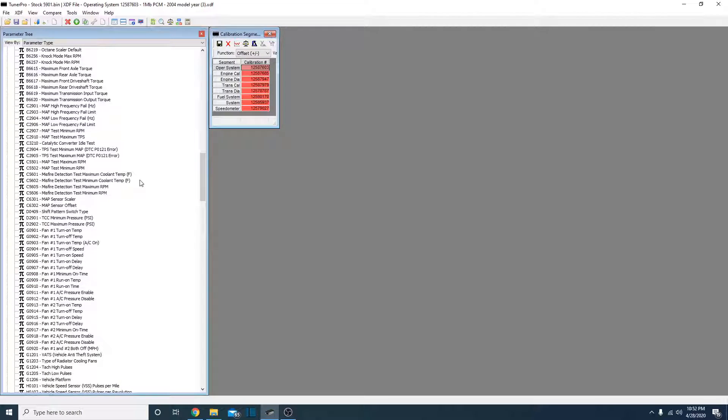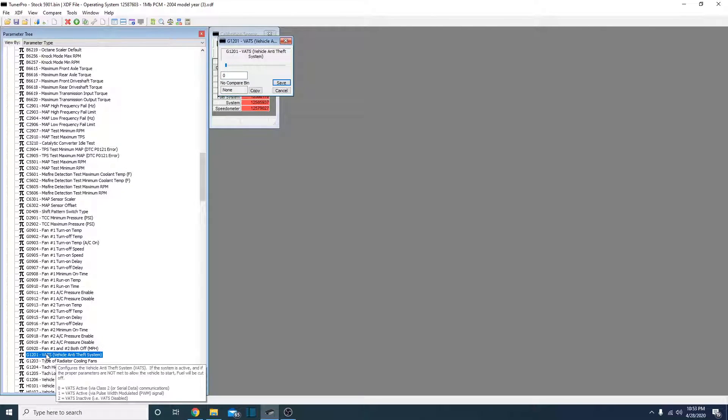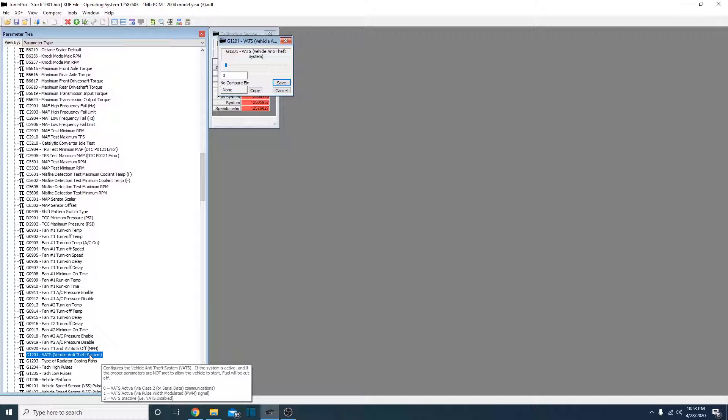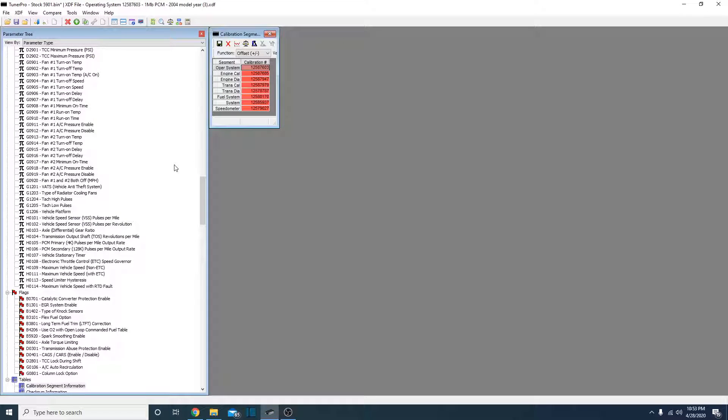Let's get into the point of this video today. We're going to take a look at deleting VATS. As you can see down at the bottom, once you hover over VATS, which is G1201 on this particular XDF, this one has a description that's going to show you your options. 0 is class 2 data, which is what this one's currently set at, and 2 is inactive. Let's just go ahead and slide this over to 2. We're going to disable VATS on this one. We're going to save that, so we've made one change there.